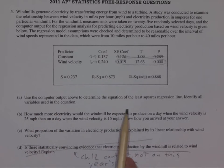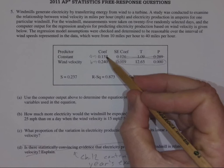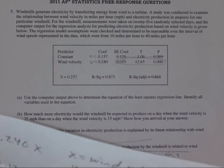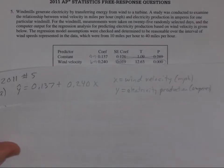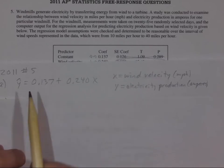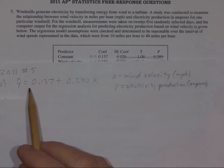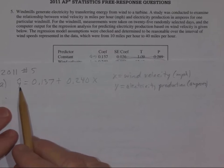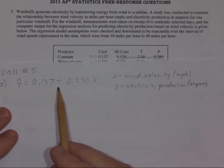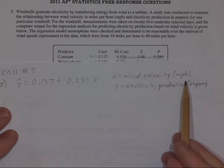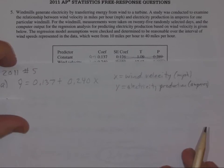Part A says determine the equation of least-squared regression line. It said identify the variables, but even if it didn't say that, you would be expected to do that. There's my A, there's my B, there's my y-intercept, and there's my slope. The equation of least-squared regression line is just that. And put a y-hat on it. This is predicted values. This isn't actual y-values. So we put a hat on things that are predictions. So it's y-hat equals, there it is, where x is the wind velocity in miles per hour and y is the electricity production in amperes. That's it for part A.